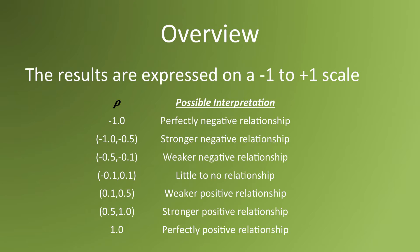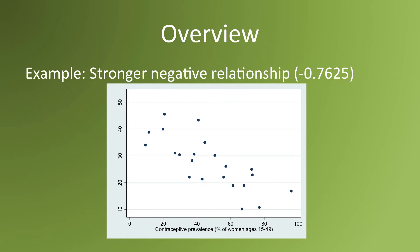It can be hard to make correlations concrete, so here are some real-world examples. This is an example of a strong negative relationship. It describes the relationship between countries' birth rates and the prevalence of contraceptive use among the female population of childbearing age. The higher the birth rate, the lower the contraceptive use, and the higher the contraceptive use, the lower the birth rate. The graph exhibits a pretty strong-looking relationship, reflected in a stronger negative correlation.